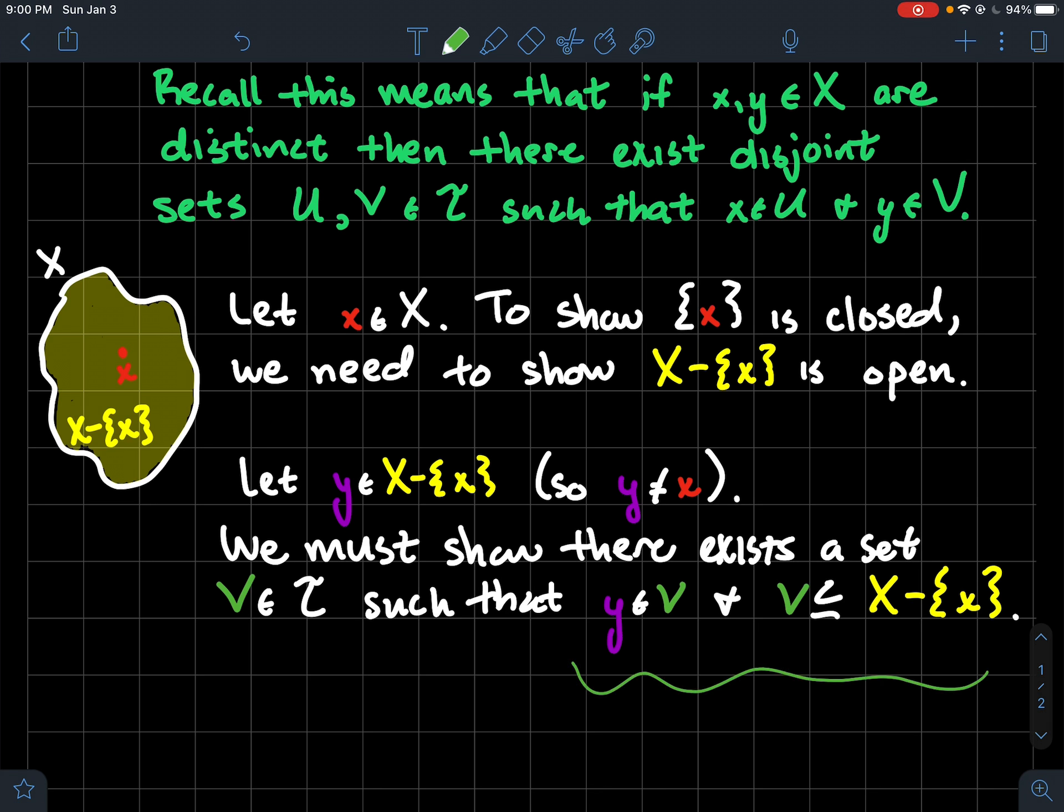Another way to say this all together that you might hear is to just say that y has a neighborhood that's completely contained inside of X minus {x}. So this would be a neighborhood of y contained in X minus {x}.